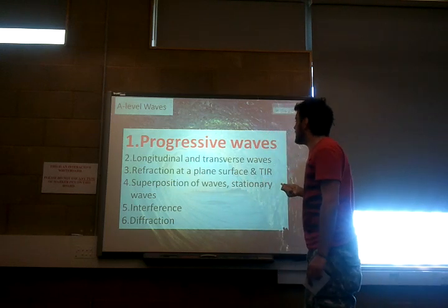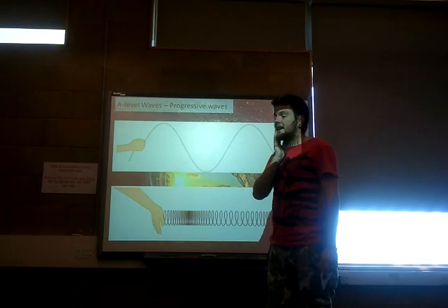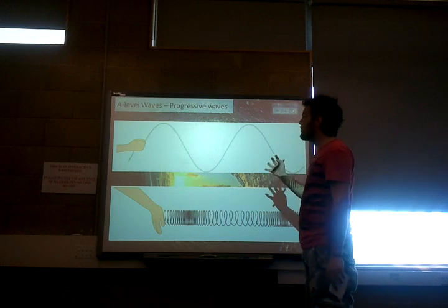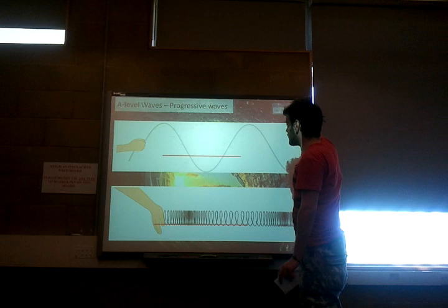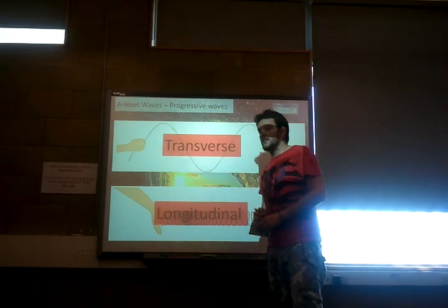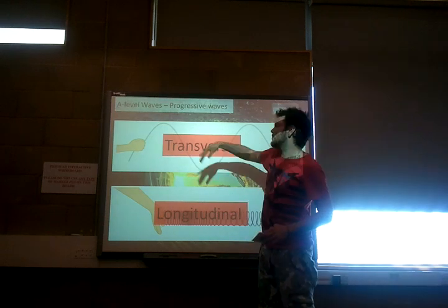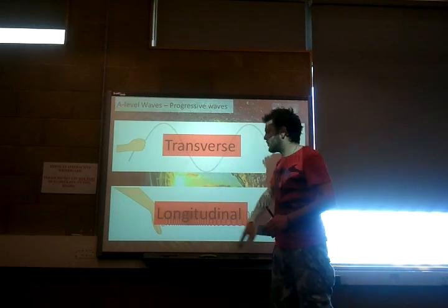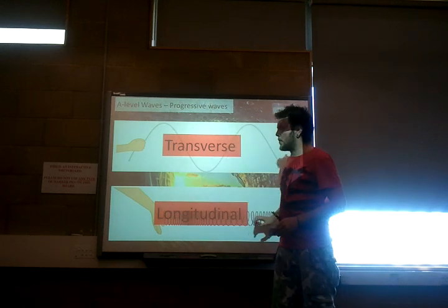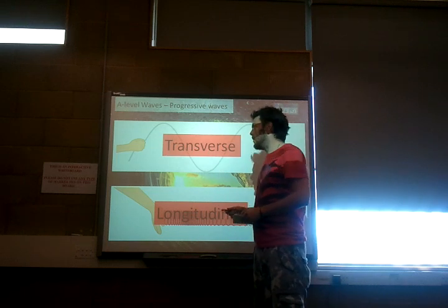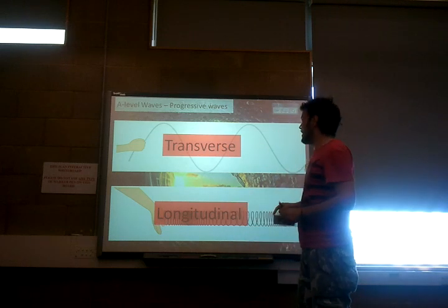Starting with progressive waves, as we know from key stage four, there are two main types: transverse and longitudinal. With transverse waves, the vibration is at 90 degrees to the movement of the wave, whereas with longitudinal waves, the vibration travels along the same path as the wave's motion.